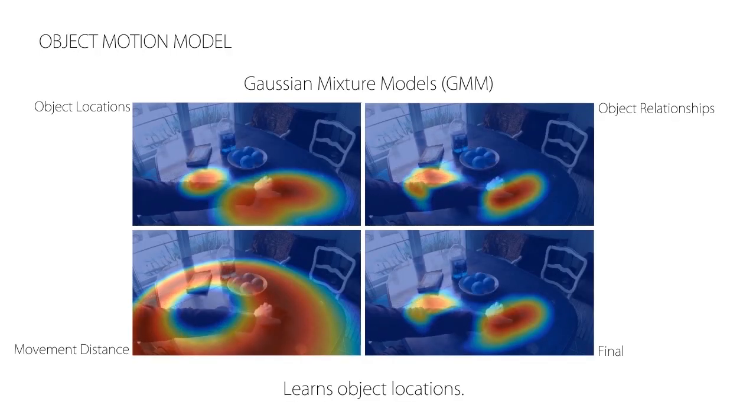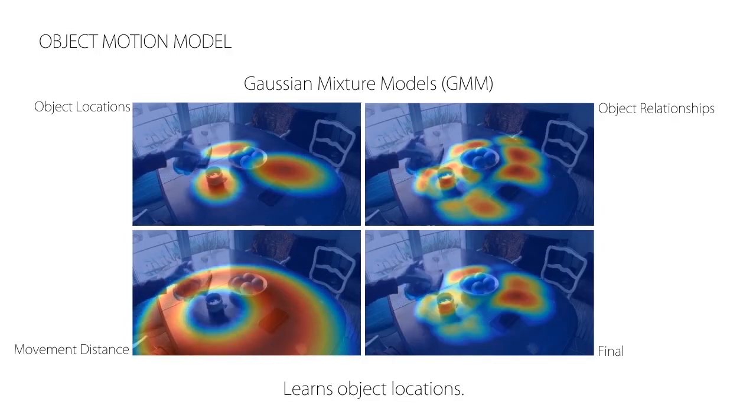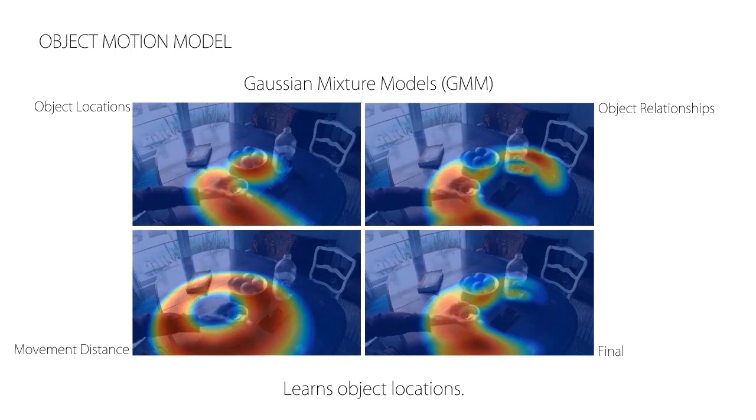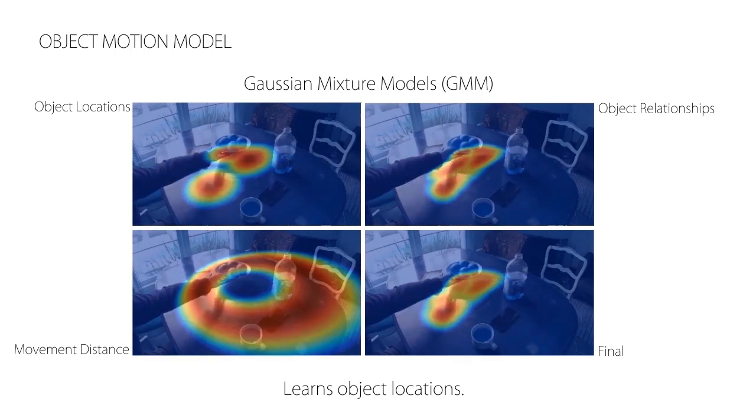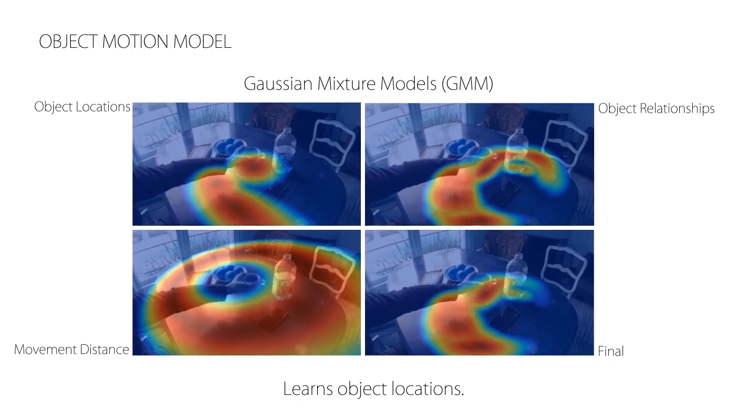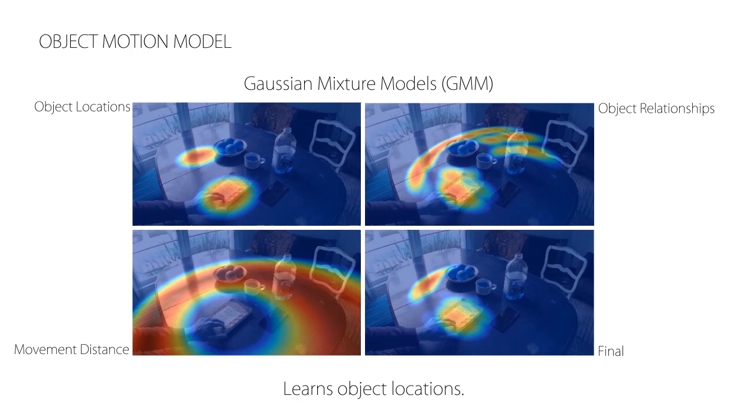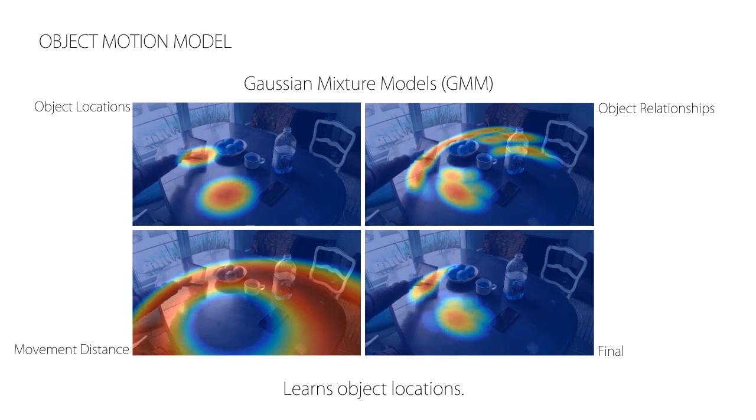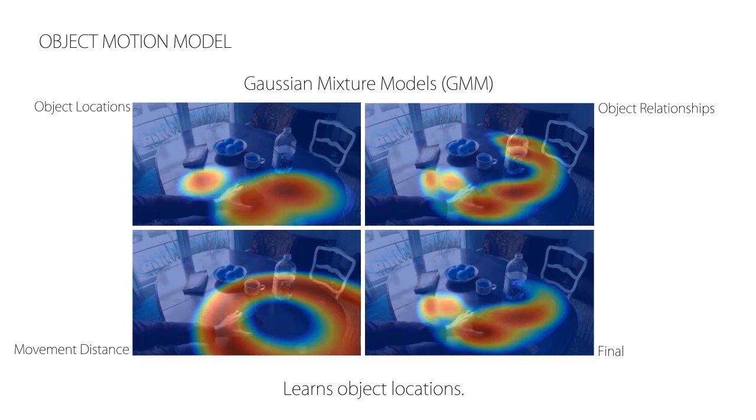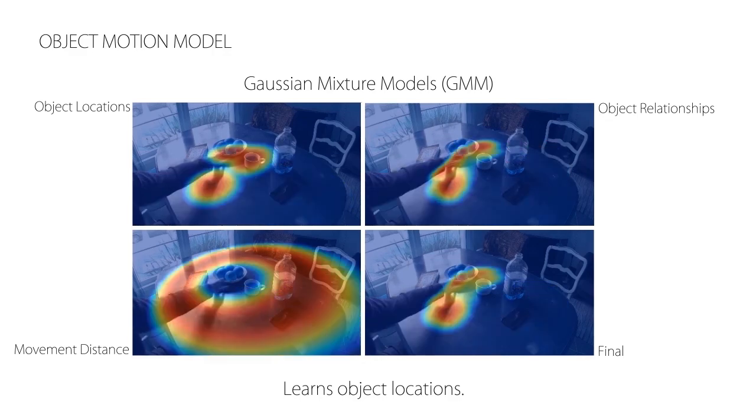Additionally, we define a motion model based on Gaussian mixture models to learn and predict characteristic properties of the motion patterns of objects. We jointly use the observed object locations in our dataset, their relationships, and their movement distance to train the model. The lower right illustration shows the final distribution for querying new positions for a few objects.